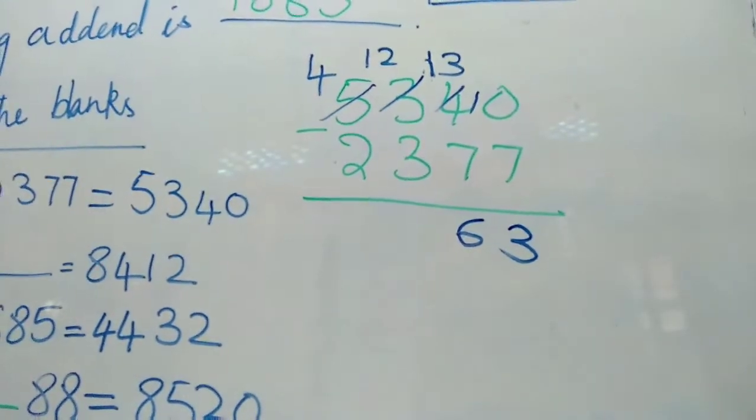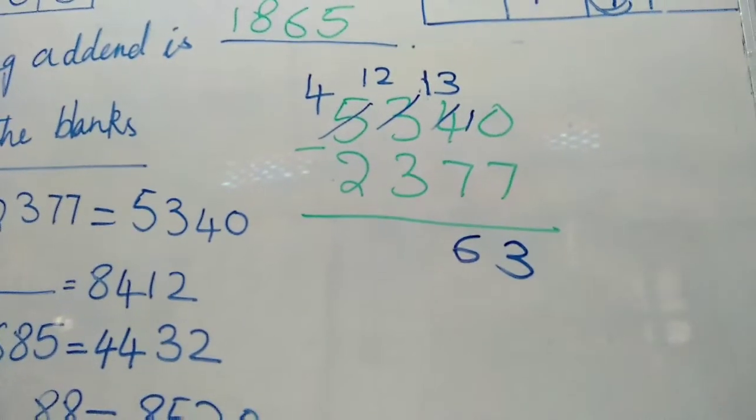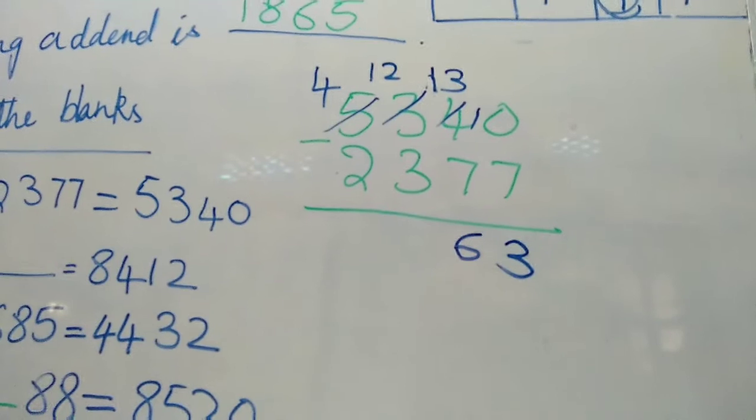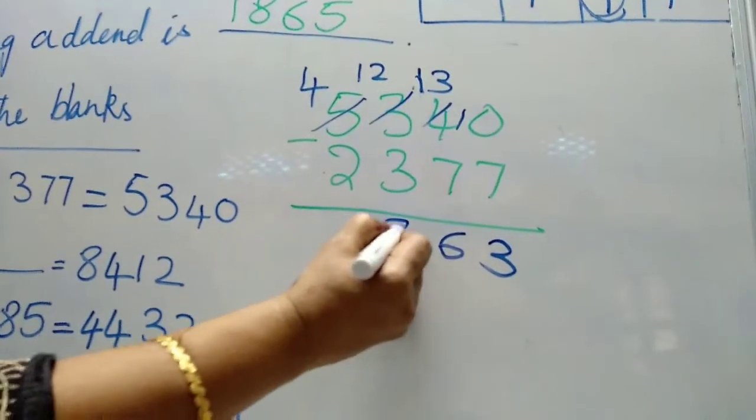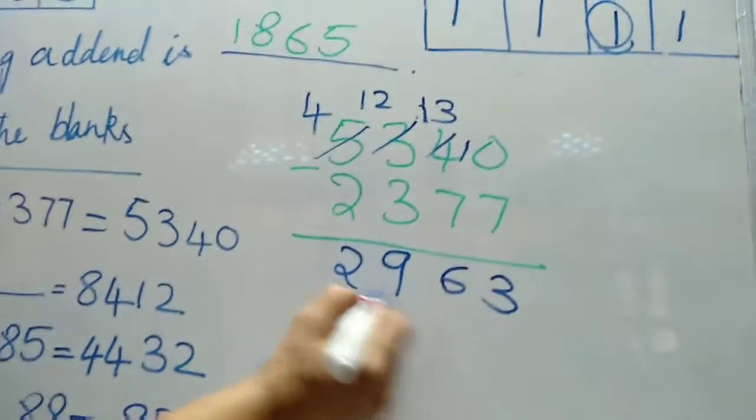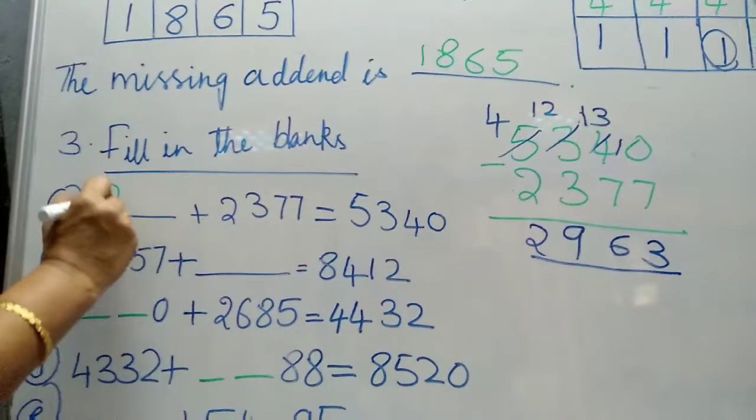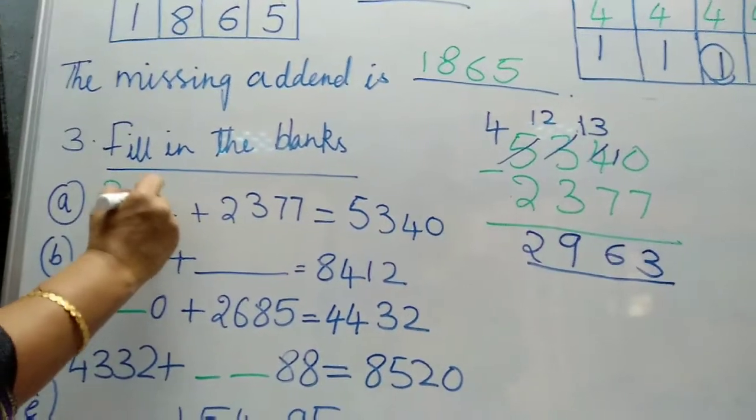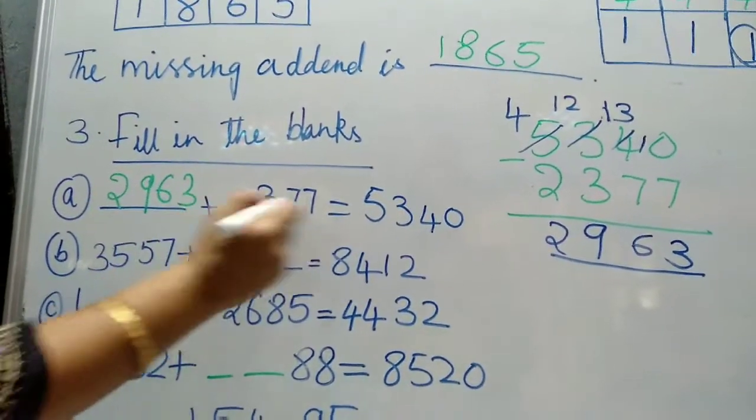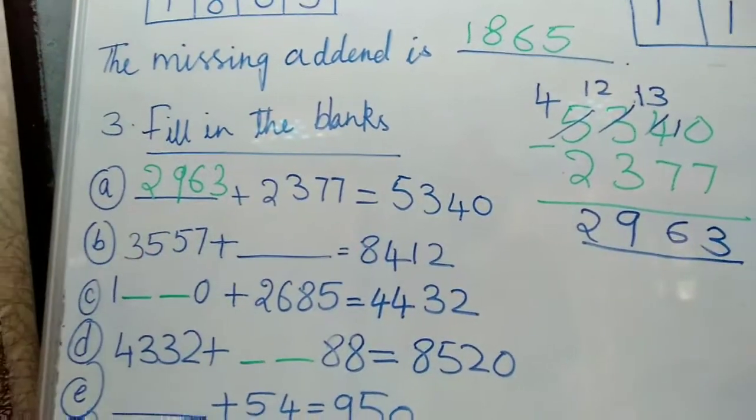After 3, count to 12, that's 9. 4 minus 2 is 2. This is one of the addend. So what is the second addend? You should write 2, 9, 6, 3. If you add these 2, you will get this answer.